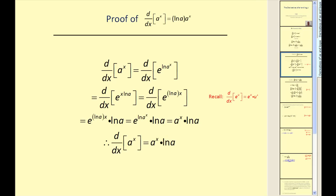Let's take a quick look at the proofs of these two derivative formulas. In order to derive the derivative of a to the power of x, we rewrite this as e to the power of natural log a to the power of x using our property of logarithms. This allows us to find the derivative using our derivative formula for e to the u, which is e to the u times u prime. Applying this derivative formula and simplifying, we end up with a to the power of x times natural log a, which is our derivative formula.